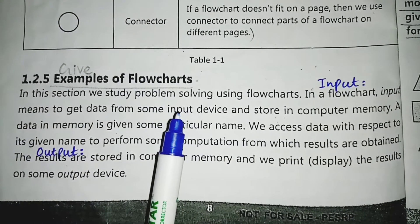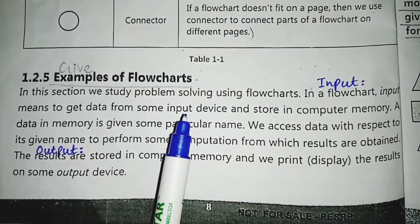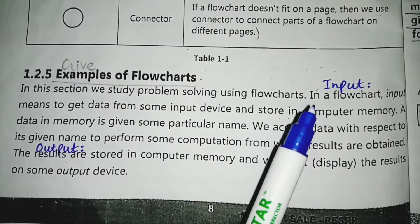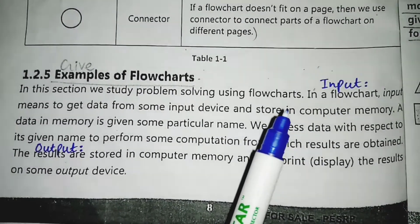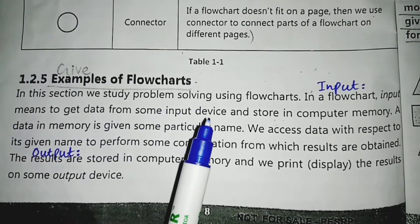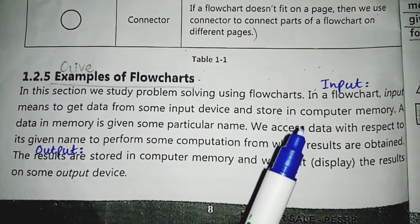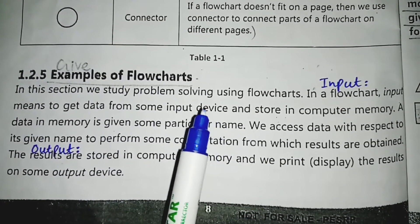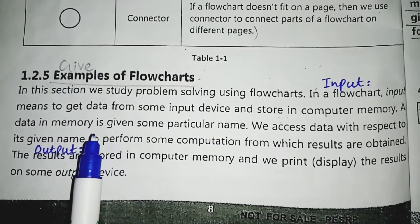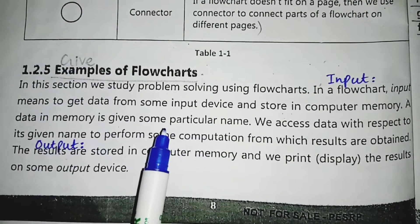Assalamualaikum students, today we will discuss examples of flowcharts. In the previous lecture we discussed the symbols used in flowcharts — input, output, and processing. In a flowchart, input means to get data from some input device and store it in computer memory. The data in memory is given a particular name; computer memory me data particular name se save hota hai.